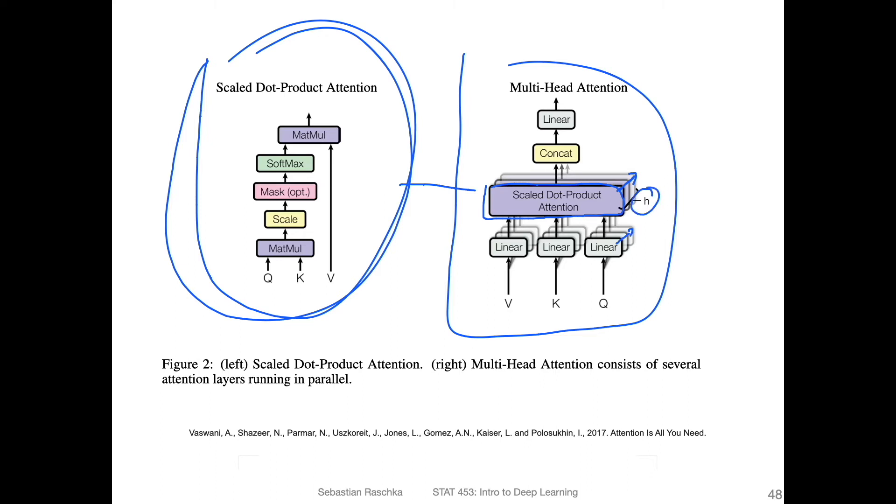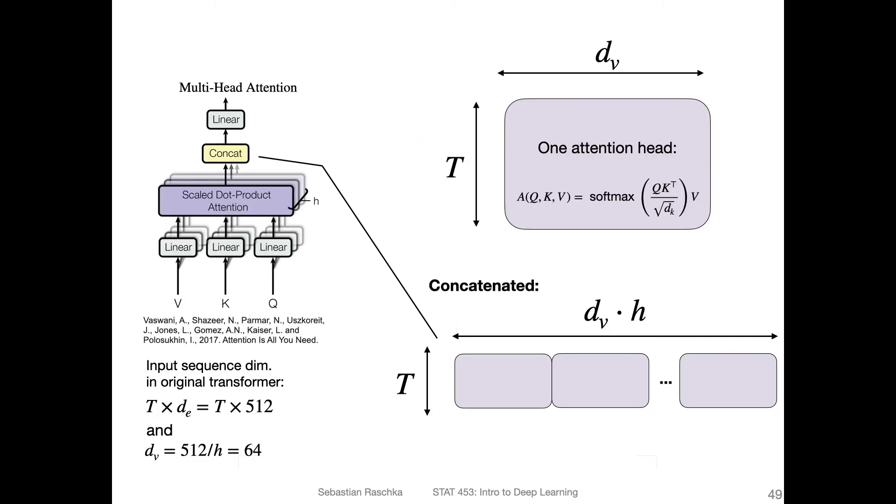You repeat this h times, whereas in the original paper, they had this eight times. So the linear corresponds, my guess, to the matrix multiplication between the weight matrices and the inputs. The input sequence is T times 512 dimensional, like we talked before.